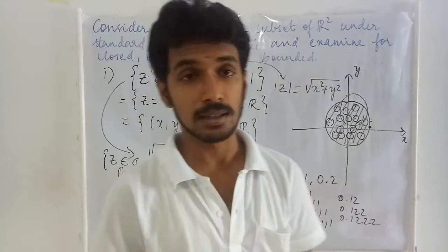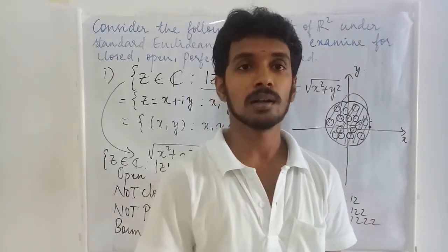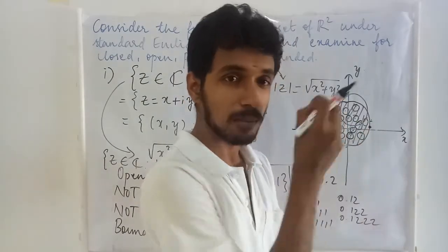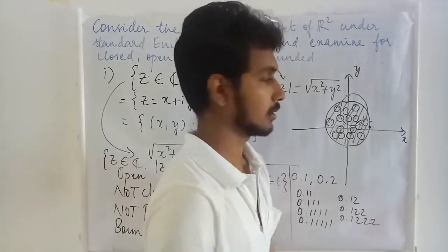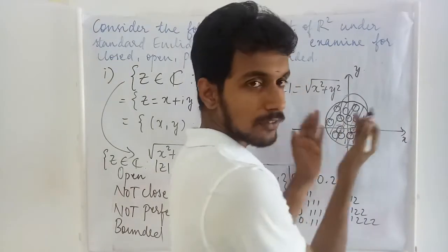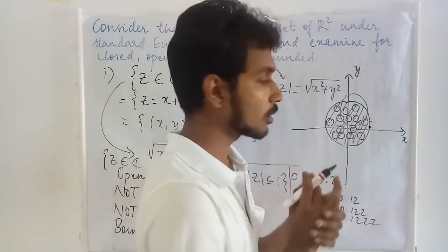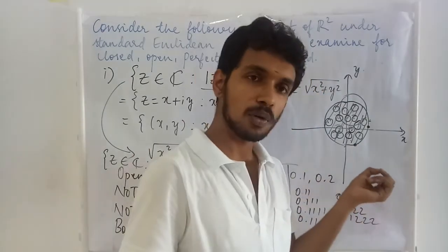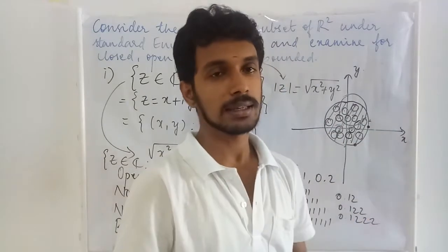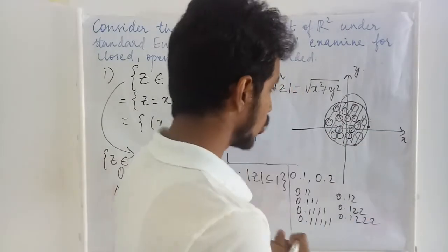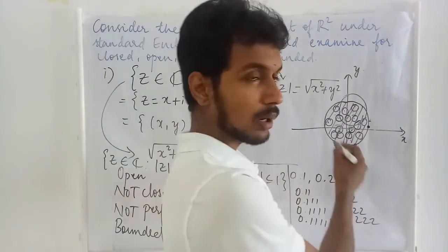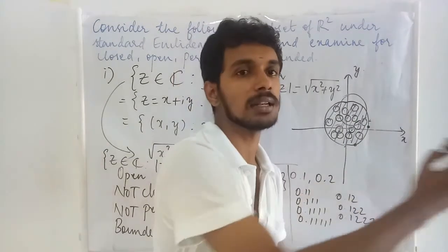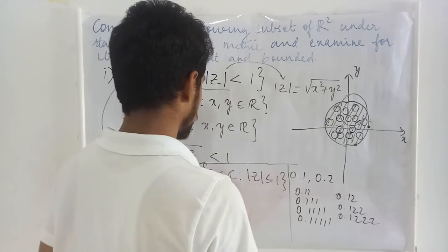We will have to examine whether the set |z| ≤ 1 is open or not. In order to say a set is open, we have to identify some neighborhood which is completely contained in this set. The interior points of the circle satisfy that condition. However, for the points on the boundary, any neighborhood will contain some point outside the set as well. So whatever may be the smallest neighborhood you choose, it contains some point outside the set. Therefore, it cannot be open.